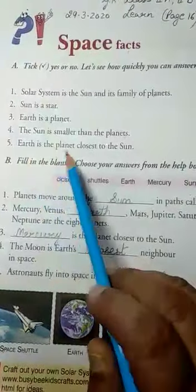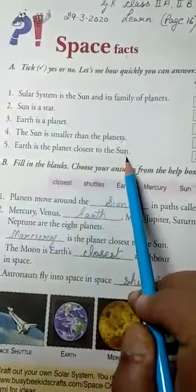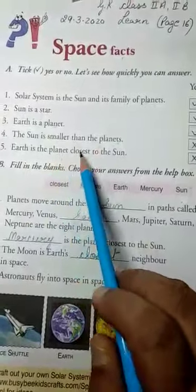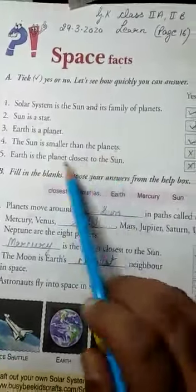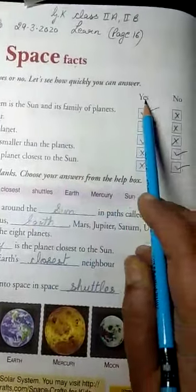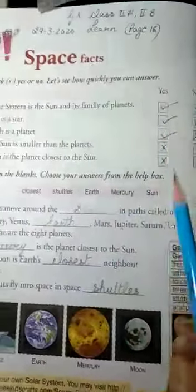Number five: Earth is the planet closest to the sun. No, earth is not the planet which is closest to the sun. Mercury is the planet closest to the sun. So in this you have to put a cross in the yes column and put a tick mark in the no column.